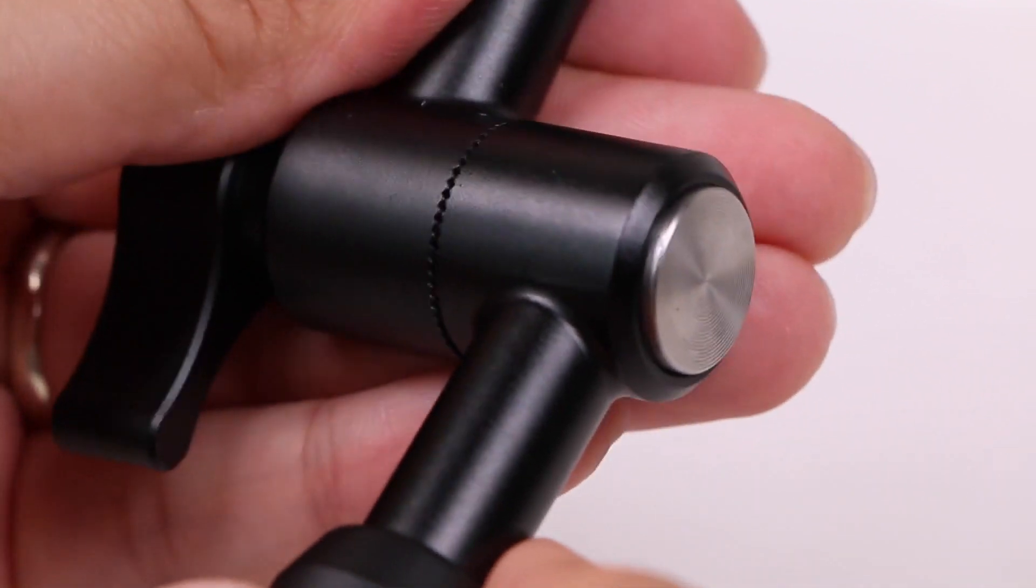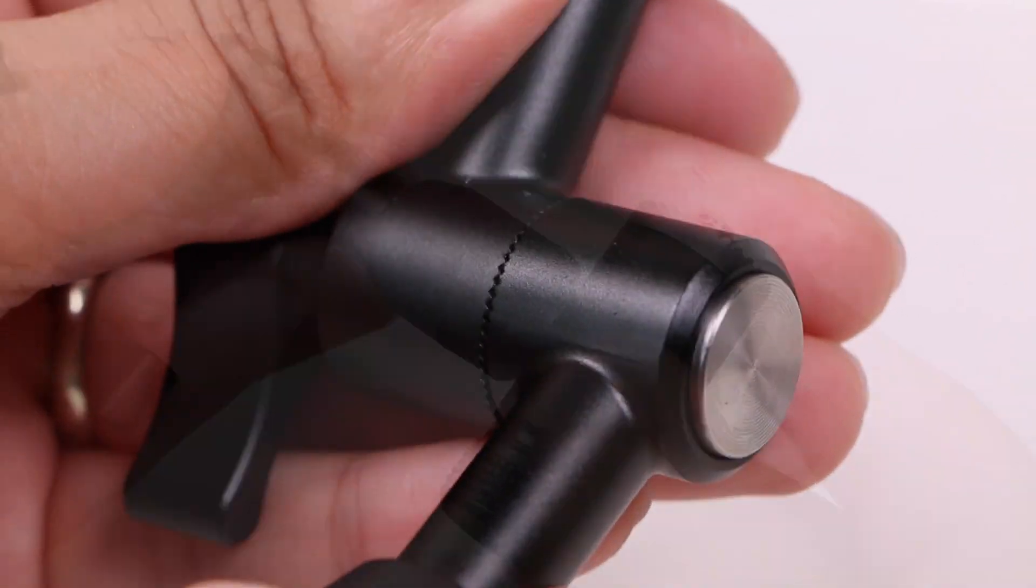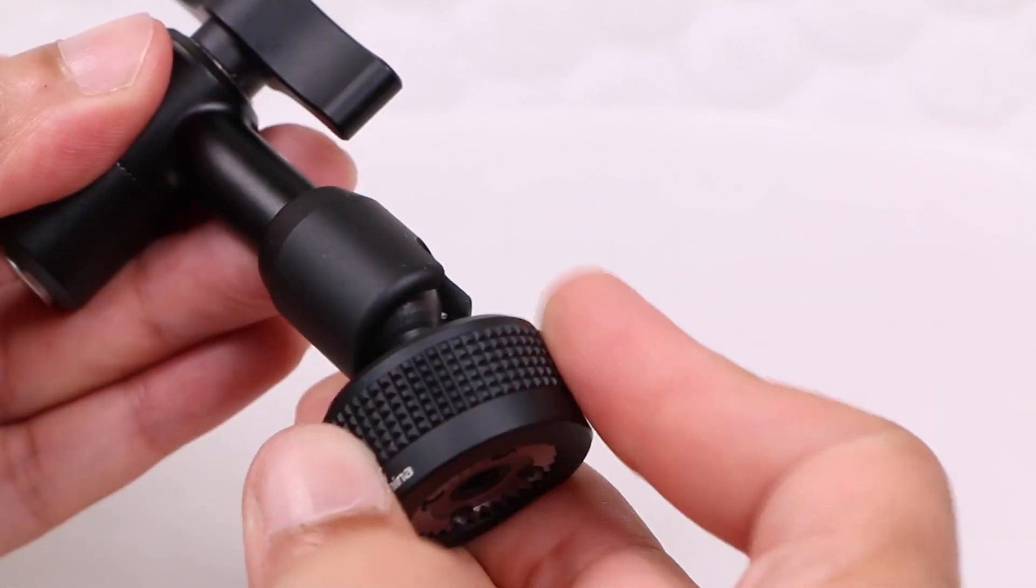Loosening the one thumb screw releases the entire unit, including the centre pivot point, which incorporates integrated teeth, as well as the ball joints built into either end of its arm.